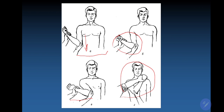After reduction, it is very important to immobilize the limb for 3 weeks. You may use a sling, a plaster bandage, a soft bandage, or a dissolve bandage. If immobilization is not performed, the incidence of recurrent dislocation is very high.